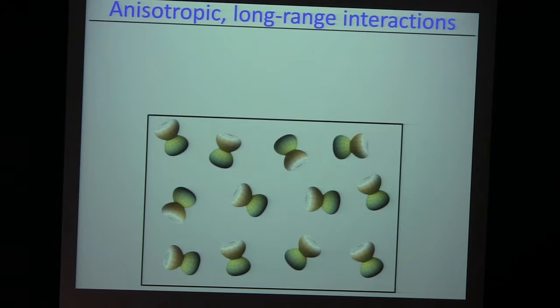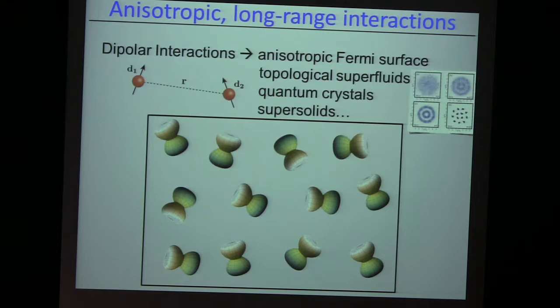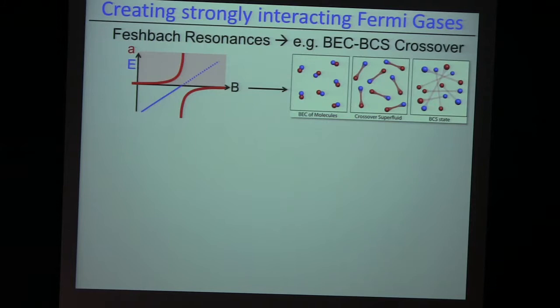A third way among many others to induce strong interactions is to look at not point-like interactions anymore — S-wave collisions — but go way beyond. One very interesting type is dipolar interactions, where fermions have dipoles attached to them and now they can repel or attract. The collision is long-range and anisotropic. This gives rise to a proposed wealth of quantum states of matter that would be wonderful to see — for example, a quantum crystal that is at the same time superfluid: a supersolid induced by dipolar interactions.